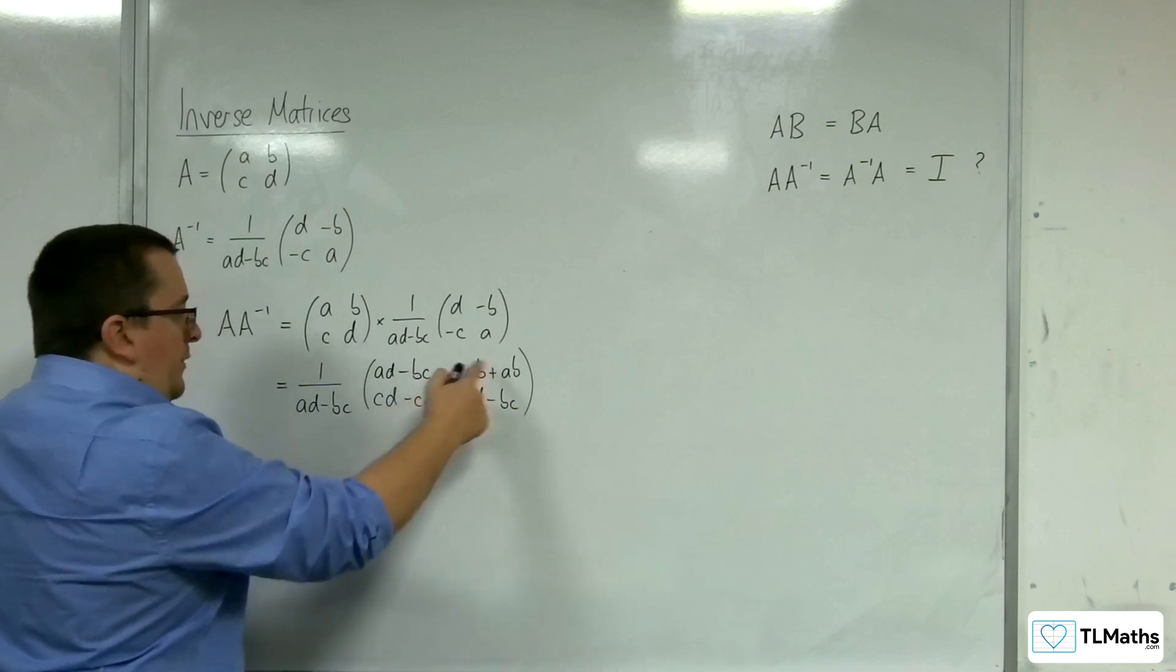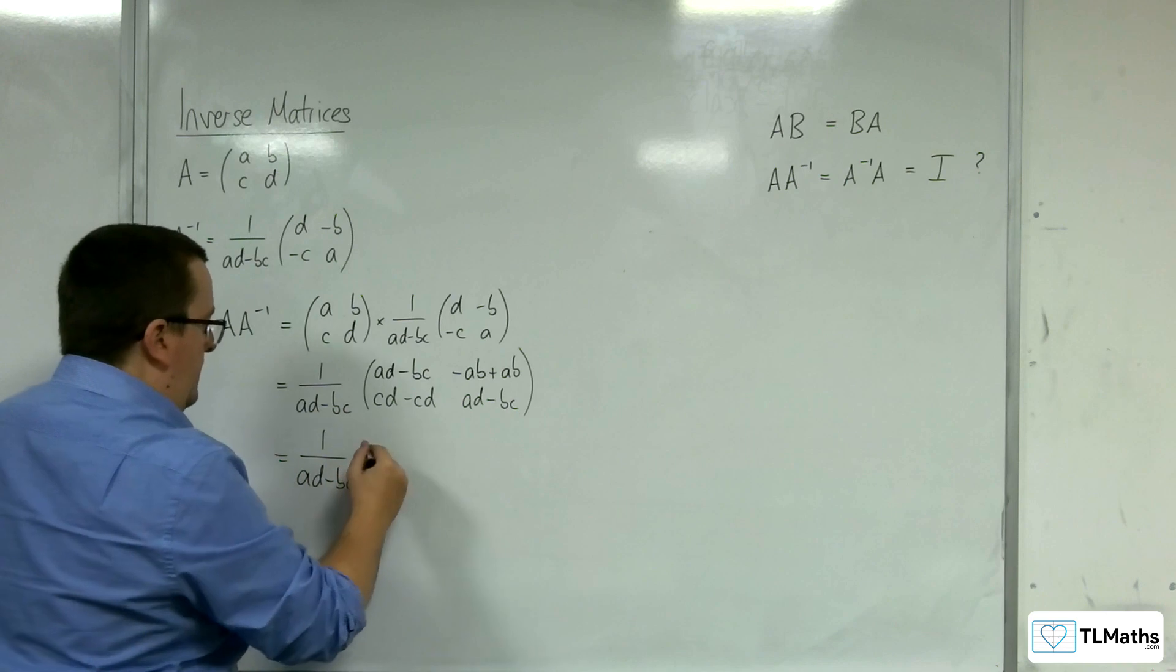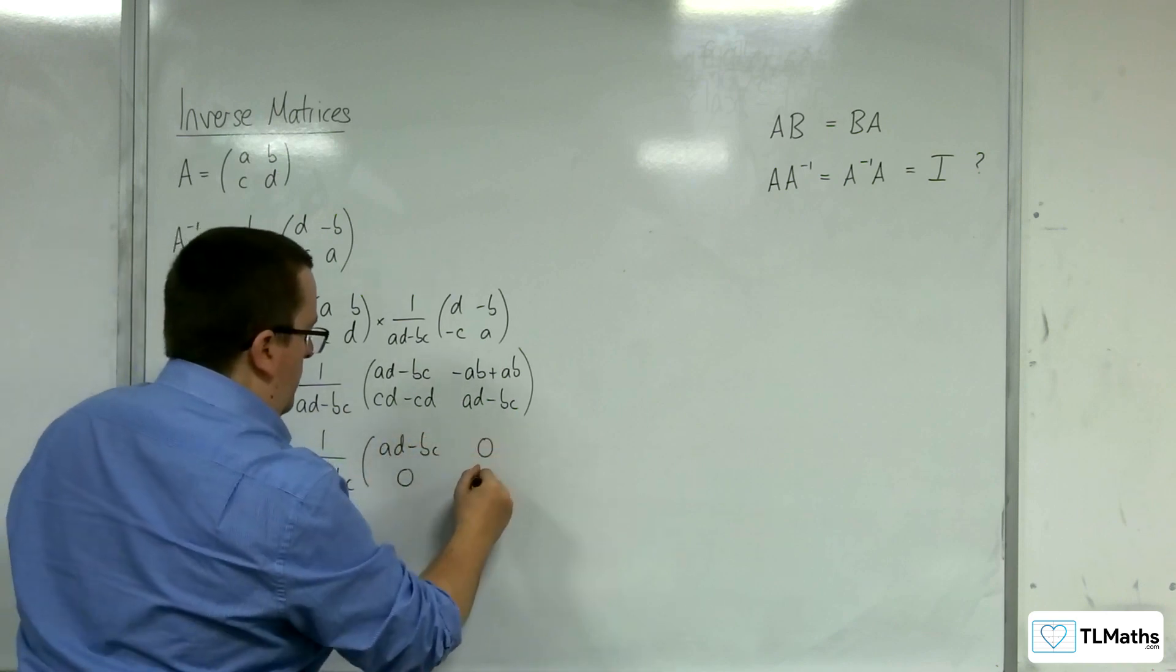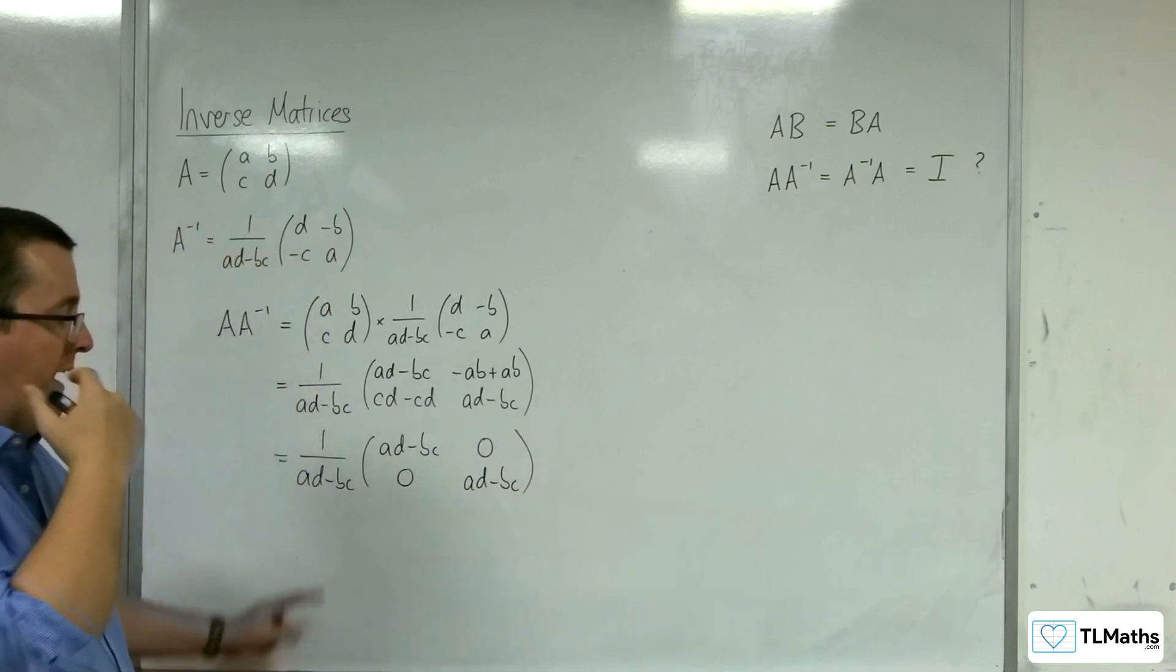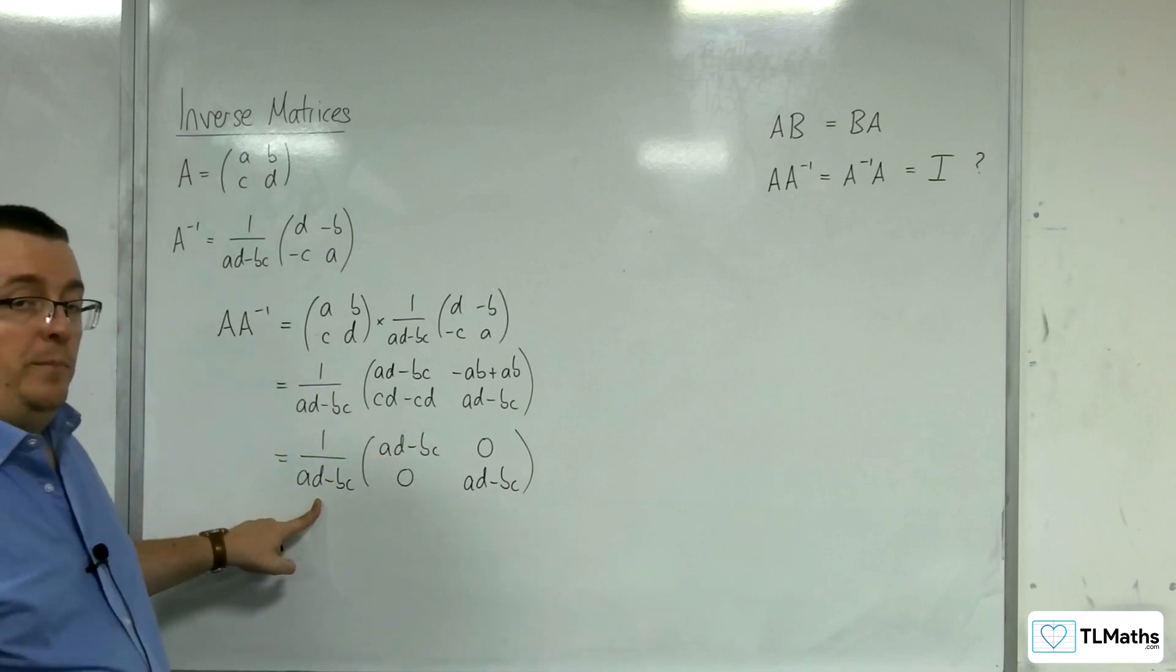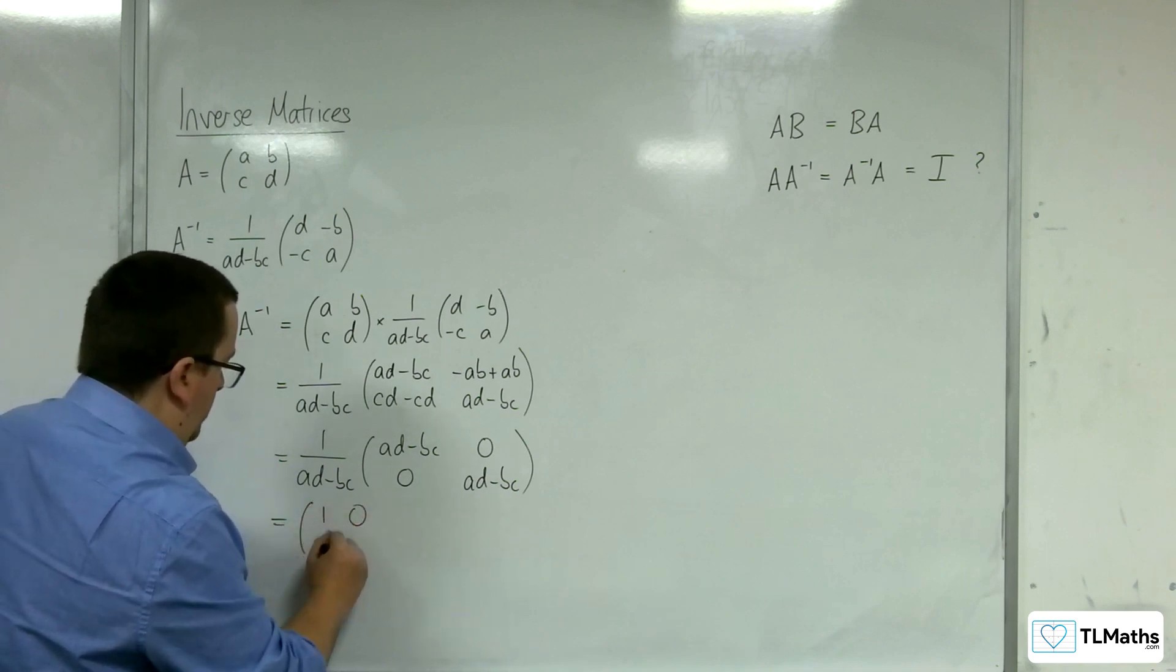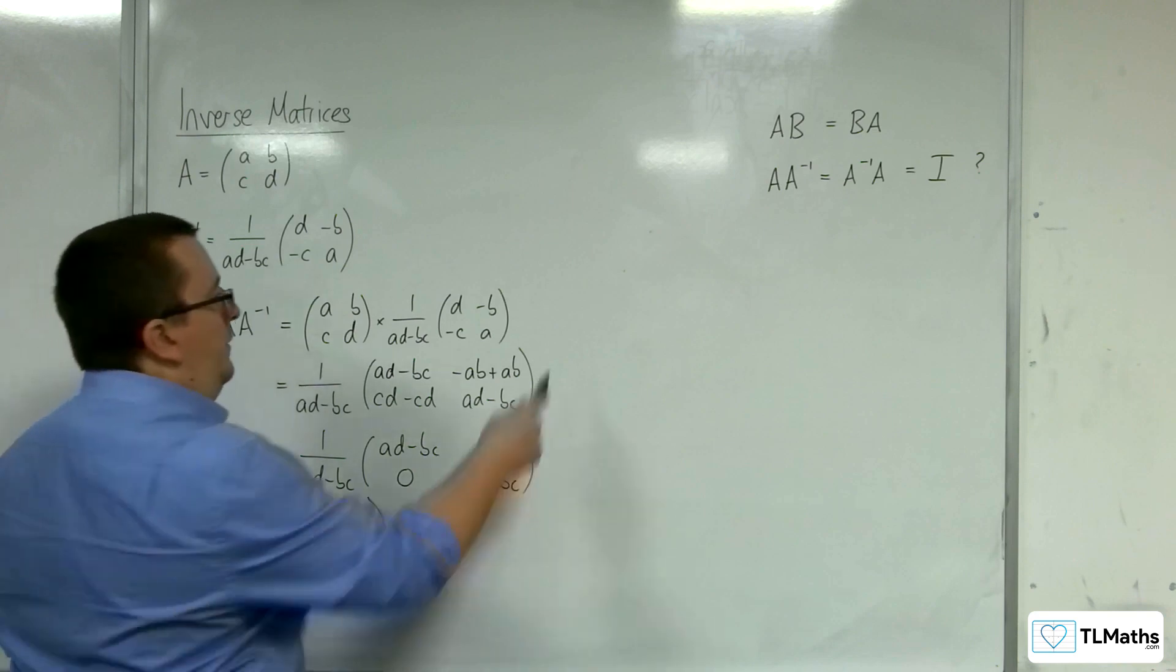So these terms here, you can see, are going to cancel. So we've got 1 over AD - BC, and AD - BC, 0, 0, AD - BC. And of course, now I can bring the 1 over AD - BC back into the matrix. AD - BC divided by AD - BC will be 1. And so this is just the identity matrix, as we wanted.